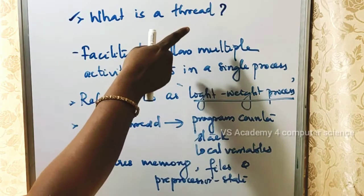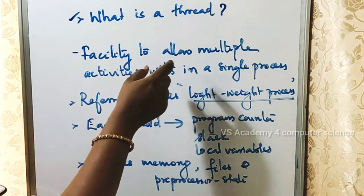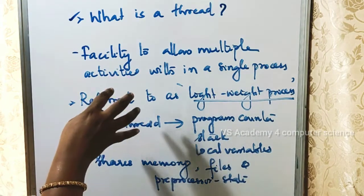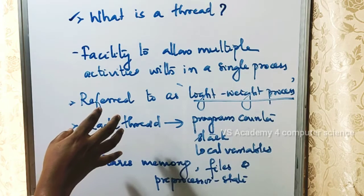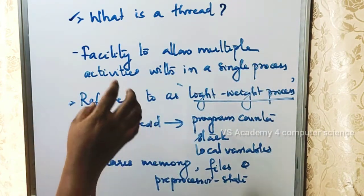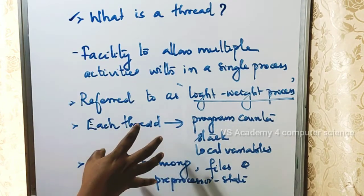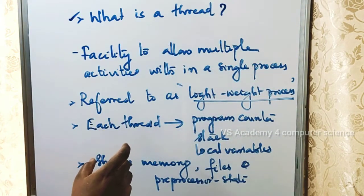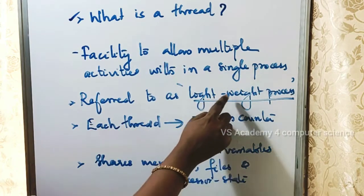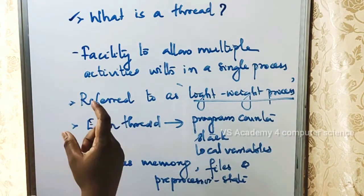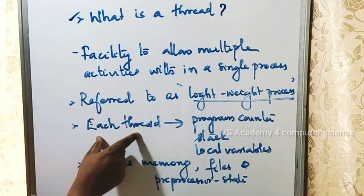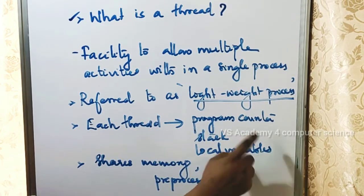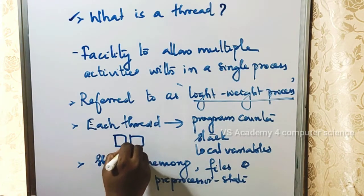So what is a thread? A thread is the facility to allow multiple activities within a single process. A process is a program under execution. A program can have multiple activities implemented through threads. Each thread has its own program counter, stack, and local variables.